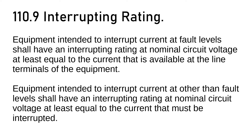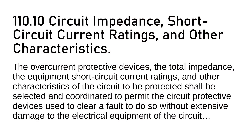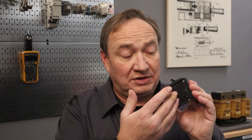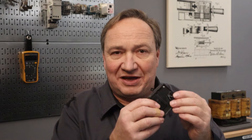NEC 110.9, Interrupting Rating: equipment intended to interrupt current at fault levels shall have an interrupting rating at nominal circuit voltage at least equal to the current that is available at the line terminals of the equipment. And then 110.10 also requires that equipment short circuit current ratings and other characteristics of the circuit to be protected shall be selected and coordinated to permit the circuit protective devices used to clear a fault to do so without extensive damage to the electrical equipment of the circuit. So if I've got a breaker or a fuse that protects my electrical circuit, when it trips under a short circuit, we want it to stay together — we don't want it to blow apart. We have to be within that rating.